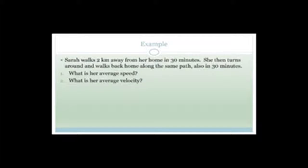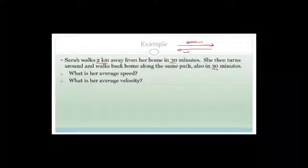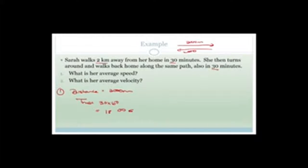Sarah walked two kilometers away from her home in 30 minutes. She then turns around and walks back along the same path, also in 30 minutes. What is Sarah's average speed? She walked 2,000 meters there and 2,000 meters back. The time needs to be in SI units — 30 minutes times 60 equals 1,800 seconds.